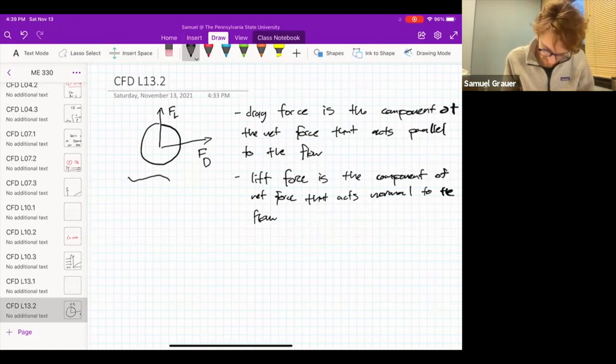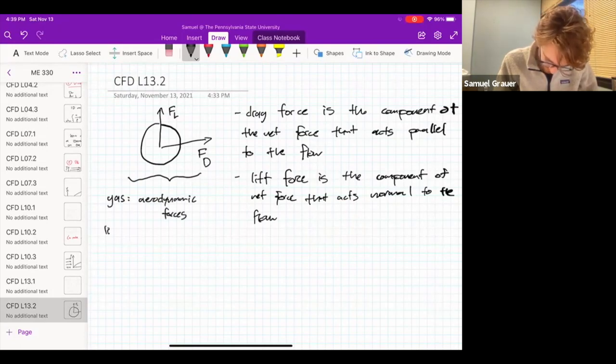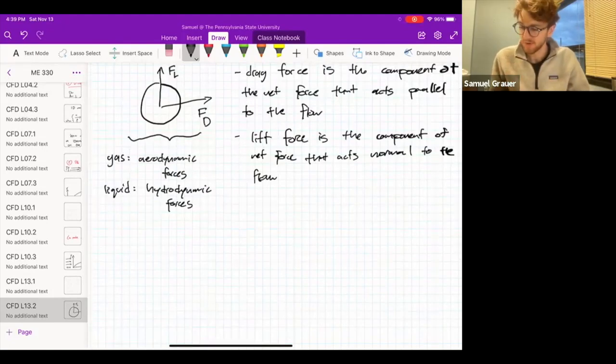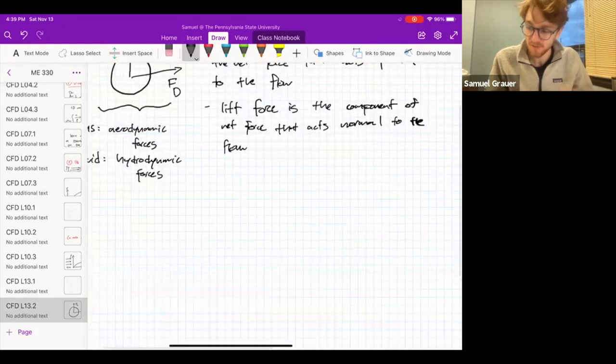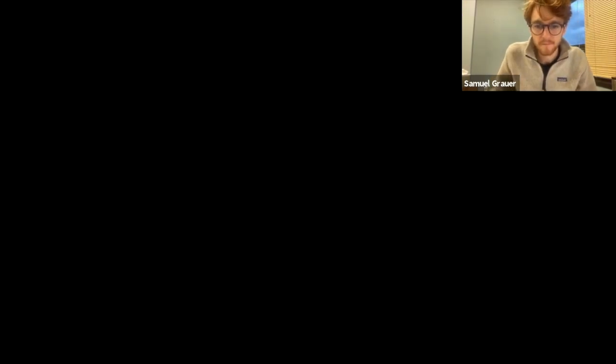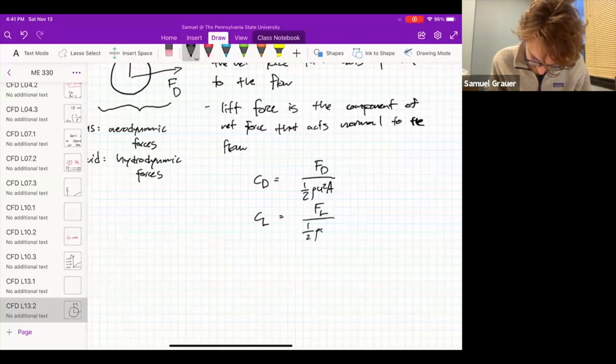And one thing I should say is that when these forces are applied to a gas, we call them aerodynamic forces. And for a liquid, they are hydrodynamic forces. And some important expressions that we're going to deal with in this week's module are these drag coefficient forces. So we've got CD, which is a non-dimensional drag coefficient, which is going to be equal to the drag force normalized by half rho u squared a, as well as a lift force, which very similarly is just equal to lift force over half rho u squared a.